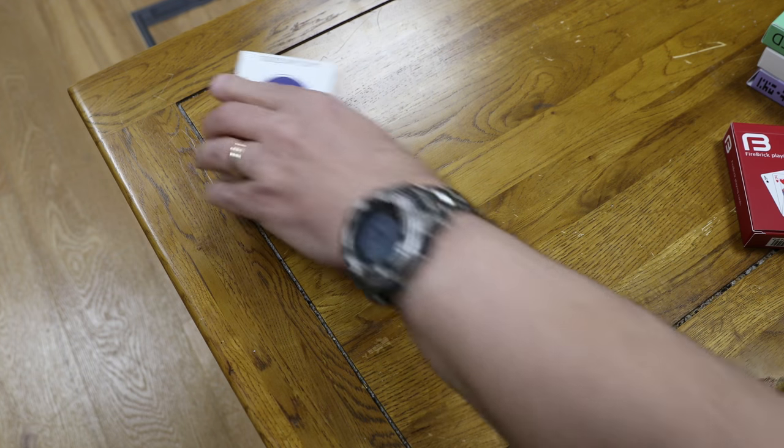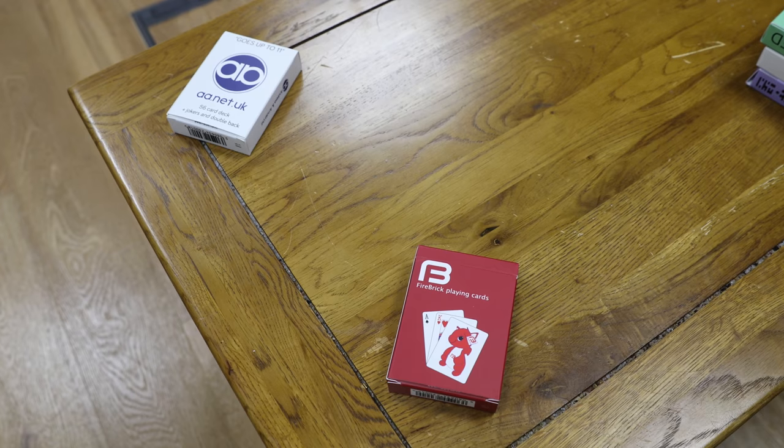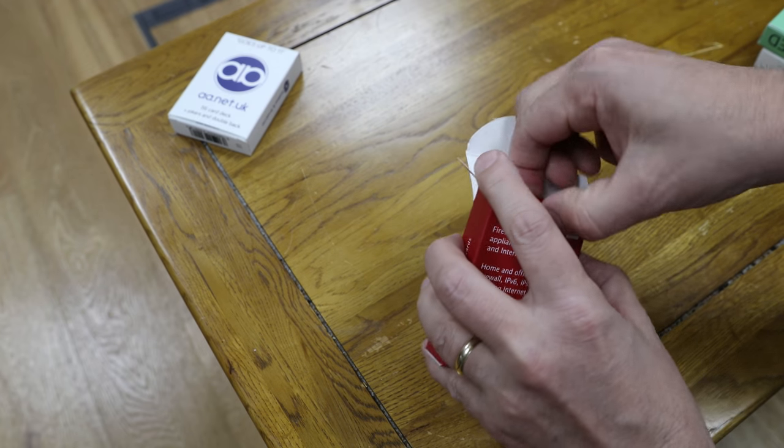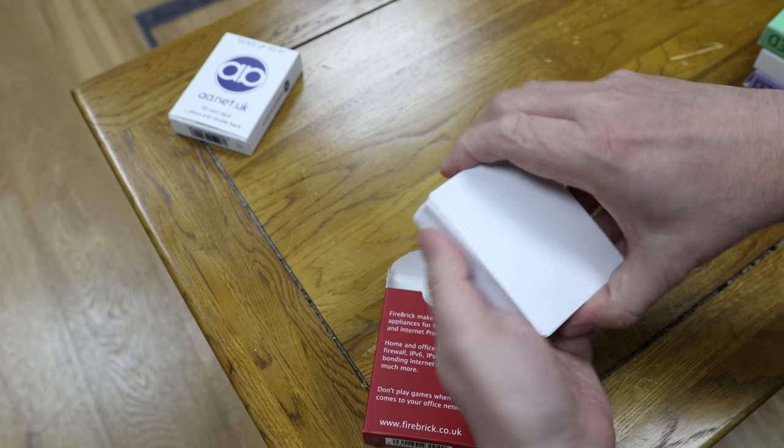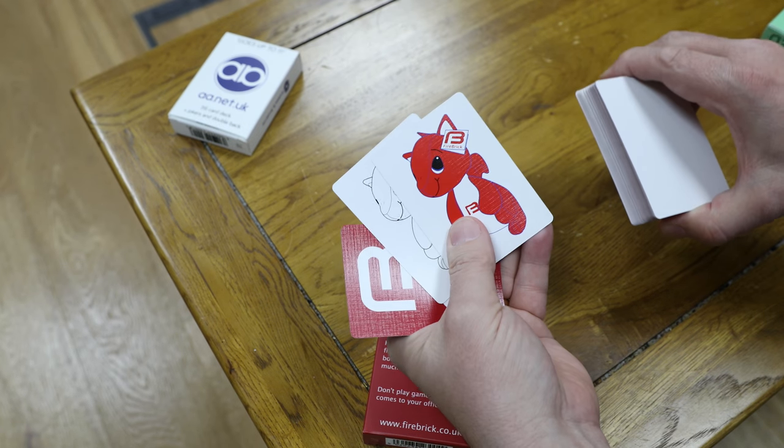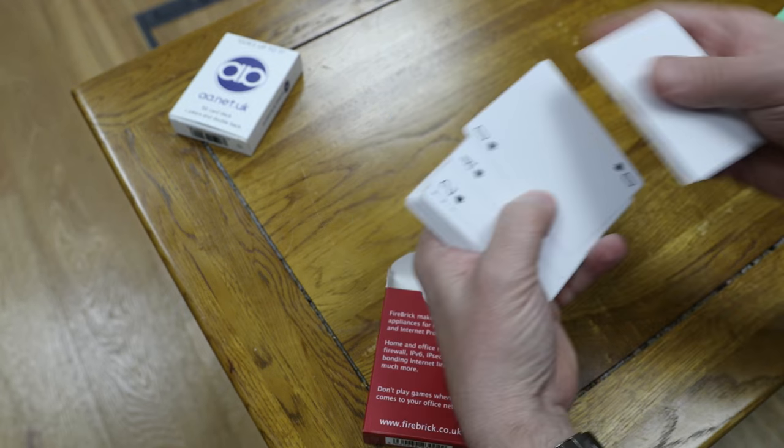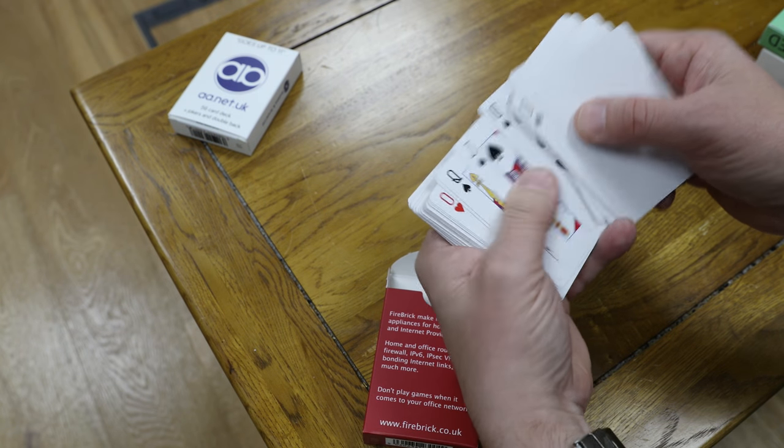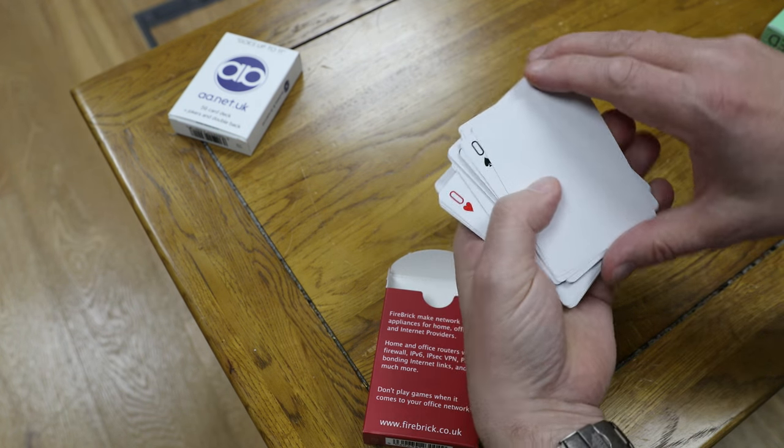Moving on to the Firebrick deck, once again we have a blank card, a double-backed card, and two jokers. And again, like the Andrews & Arnold cards, this has something special: it actually has a zero. So zero, ace, two, three, four, five, six, seven, eight, nine, ten, jack, queen, king—you actually have an extra card in each deck once again. So you could take these out if you want, or you could play with the extra cards in. Some games actually need four jokers, for example, so you could use the zeros as extra jokers.